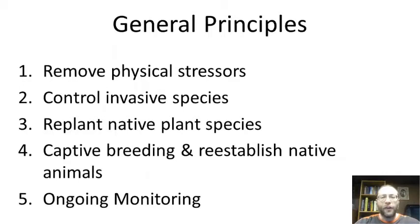These are the general principles for ecological restoration. One is to remove the physical stressors — to remove the thing that is actually disturbing the environment, like if a paper mill is putting waste and dyes into a stream, you stop that from happening. Also control invasive species — you can remove those invasive species as much as you can, and then plant native plant species to help reestablish the community. Similarly on the fauna side, you can use captive breeding and other methods to reestablish native animals. Afterwards, monitor the ecosystem to see if these methods are working and what things need to be changed.